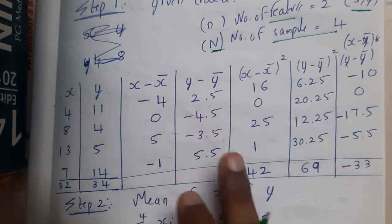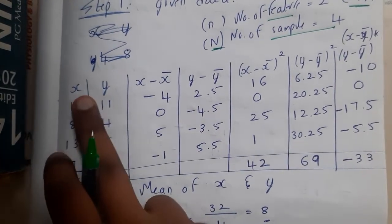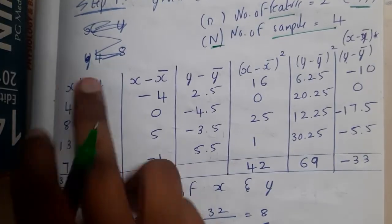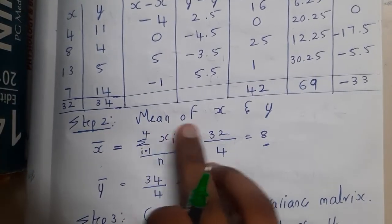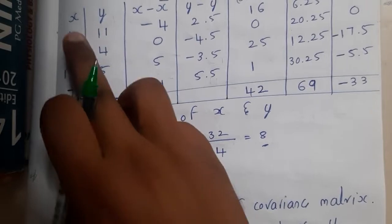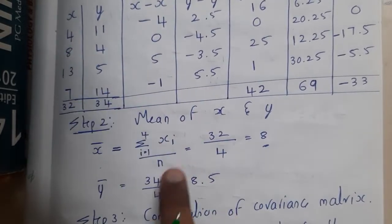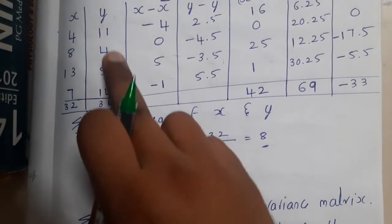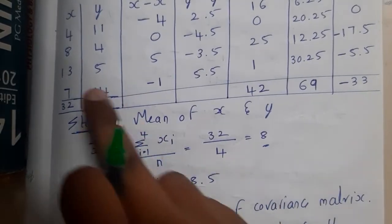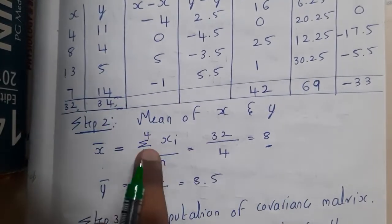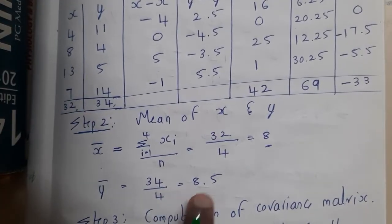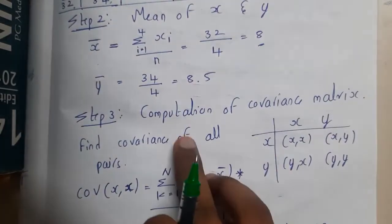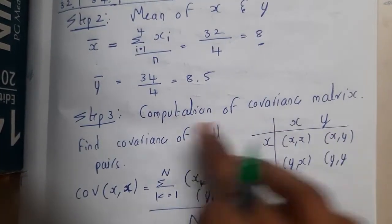First write the X values, then write the Y values. The next step is calculating the mean. Mean is nothing but the summation of all values divided by the number of items. Mean of X is 32 by 4, and mean of Y is 34 by 4, so we get 8 and 8.5. The next step is the computation of the covariance matrix.